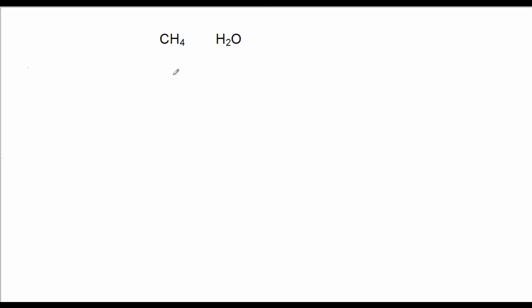Let's look at CH4 and H2O. For CH4, the Lewis structure has carbon as the central atom with four hydrogens as terminal atoms. There are four regions of electron density around the central atom, carbon. The number four corresponds to tetrahedral, and there are subcategories of tetrahedral: tetrahedral, pyramidal, and bent. In this case, because there are four single bonds making up the four regions of electron density, the molecular geometry is tetrahedral.